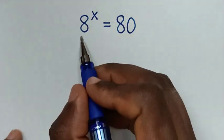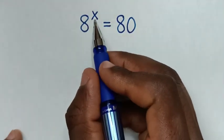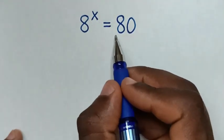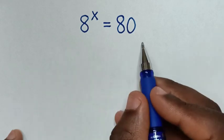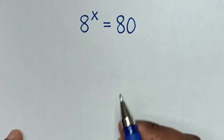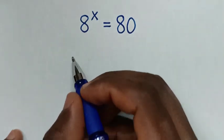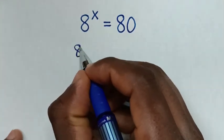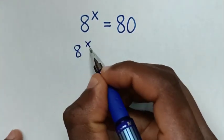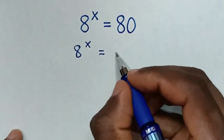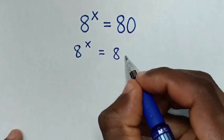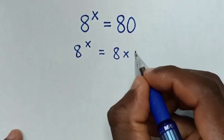Hello! How to solve 8 power of x is equal to 8a, to find the value of x from this equation. So 8 power of x is equal to 8a, which is the same as 8 times 10.